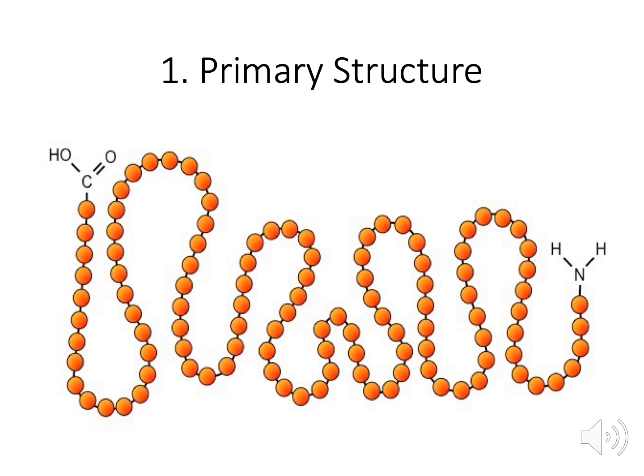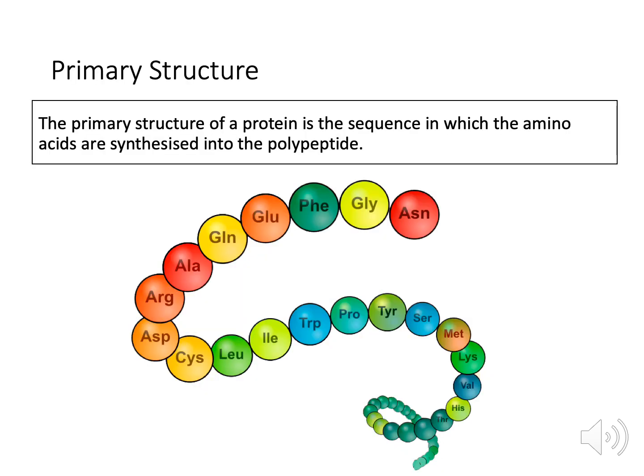Let's have a more detailed look at the primary structure itself. The definition for primary structure is: the primary structure of a protein is the sequence in which the amino acids are synthesized into a polypeptide. Remember, synthesized just means made into a polypeptide.